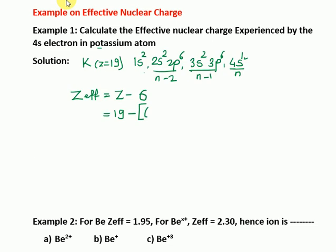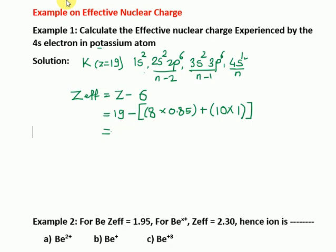The n−1 shell has a total of 8 electrons, each contributing 0.85 to sigma. The inner shells beyond n−1 contain a total of 10 electrons, each contributing 1.0. So sigma = (8 × 0.85) + (10 × 1.0) = 6.80 + 10.00 = 16.18. Therefore Z_eff = 19 − 16.18 = 2.20. This is the effective nuclear charge for the outermost electron in potassium.